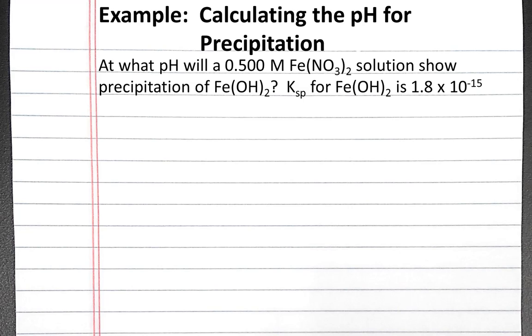In this example problem, we'll calculate the pH needed for a 0.5 molar iron 2 nitrate solution to show precipitation of iron 2 hydroxide.